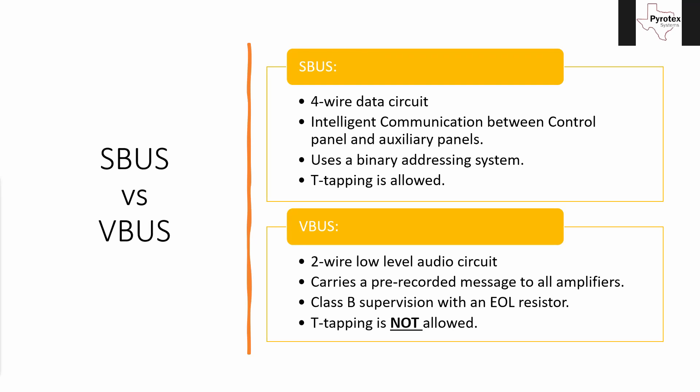If you're on a job site with a fire alarm control panel, a remote microphone at your enunciator, and a couple of amplifiers, when you pull your VBUS you have to hit your microphone first. The VBUS message only travels toward the end-of-line resistor — it doesn't travel backwards. So if you go panel, amplifier, microphone, amplifier, and then page from that microphone, only the last amplifier will get the message. You start at your fire alarm control panel, pull your wire to your microphone, then pull to all the amplifiers in the building. That's required because of the Class B supervision with the end-of-line resistor.